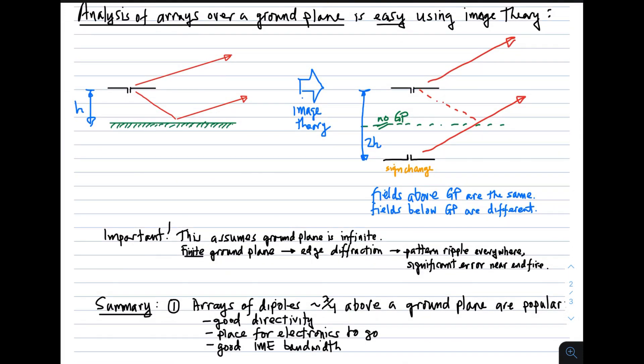Now you might ask the question, how do I analyze arrays of elements over a ground plane? And this turns out to be very easy. And the key is to use image theory. Image theory is a general concept in electromagnetics, but the part of image theory that we need here is very, very simple. And in fact, we can interpret it graphically. The idea is to start off with this picture on the left, where we have a dipole, and it's radiating. And so we get a direct contribution from the dipole, and we get a reflected contribution due to reflection from the ground plane.